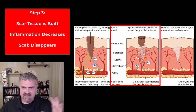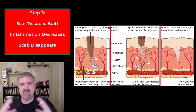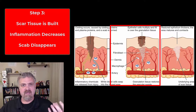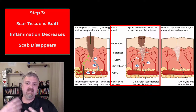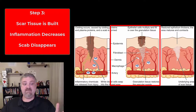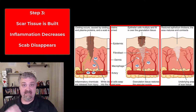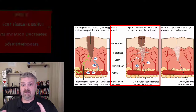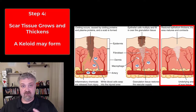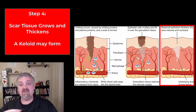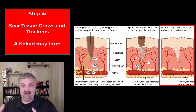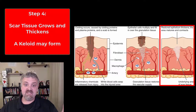Over time, the fibroblasts are going to keep replacing damaged tissue by laying down more scar tissue. The blood supply is going to be replenished. Now we have this replacement skin, but it's mainly scar tissue. This scar tissue will continue to grow and thicken, so you may see a raised keloid or at least evidence of a scar. But at least now we're not bleeding and there's not a pathway for pathogens to come in, so the skin has been repaired.